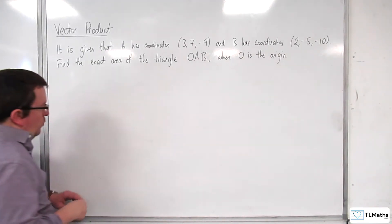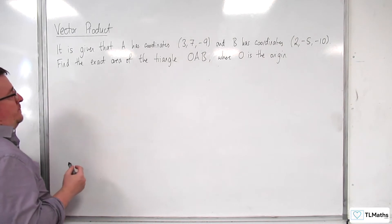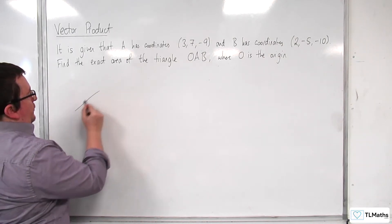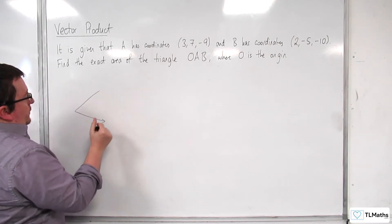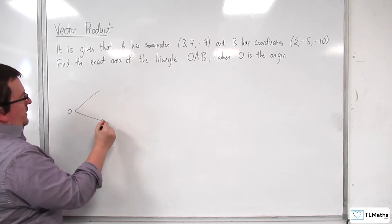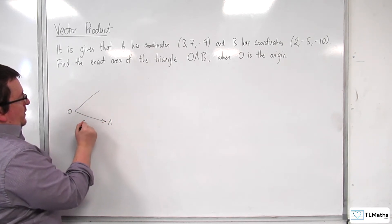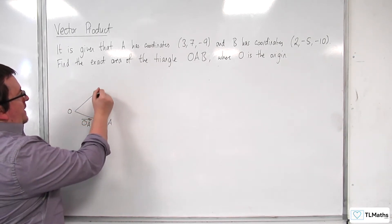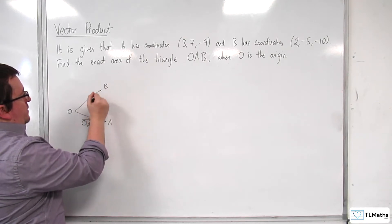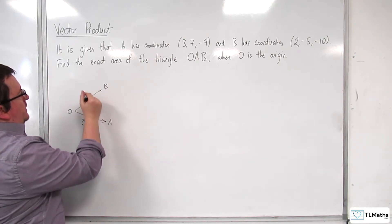So what we have seen previously is that if you've got your two vectors, here's the origin, here's the point A, so let's call this OA, and here's the point B, so this is the vector OB.